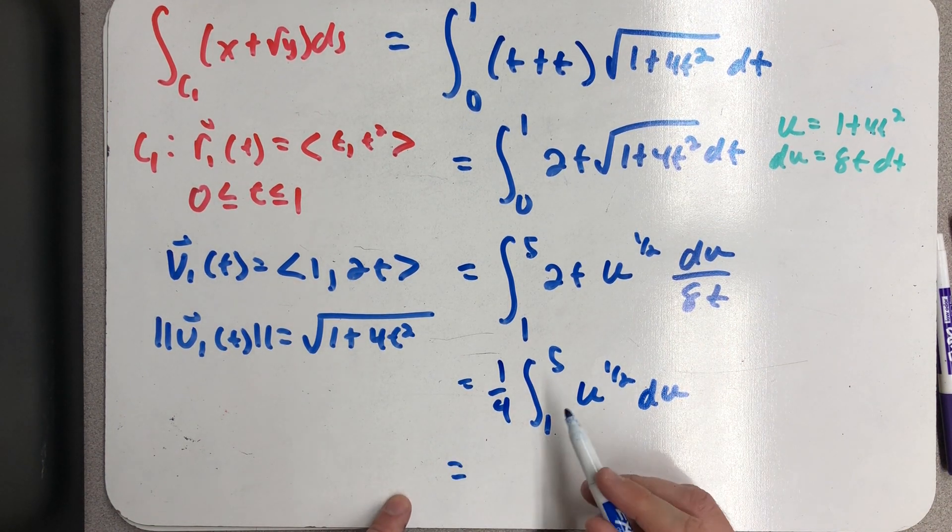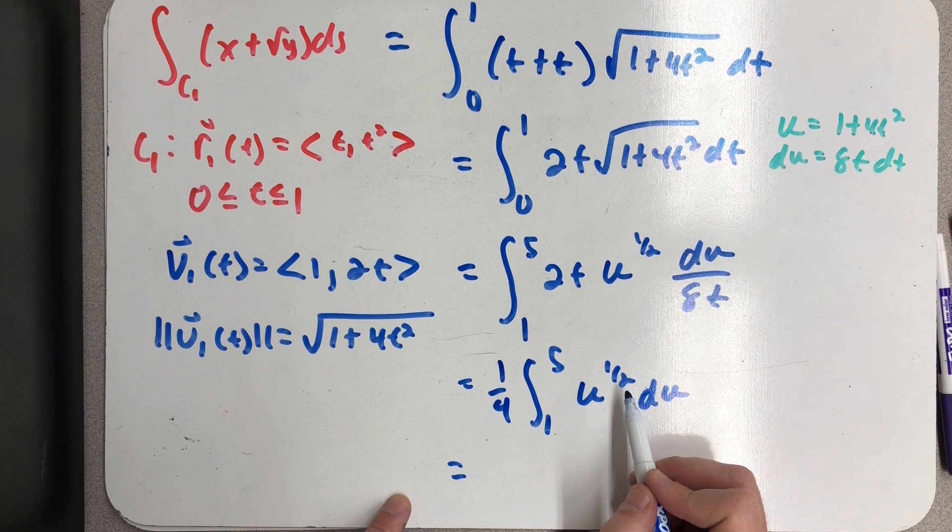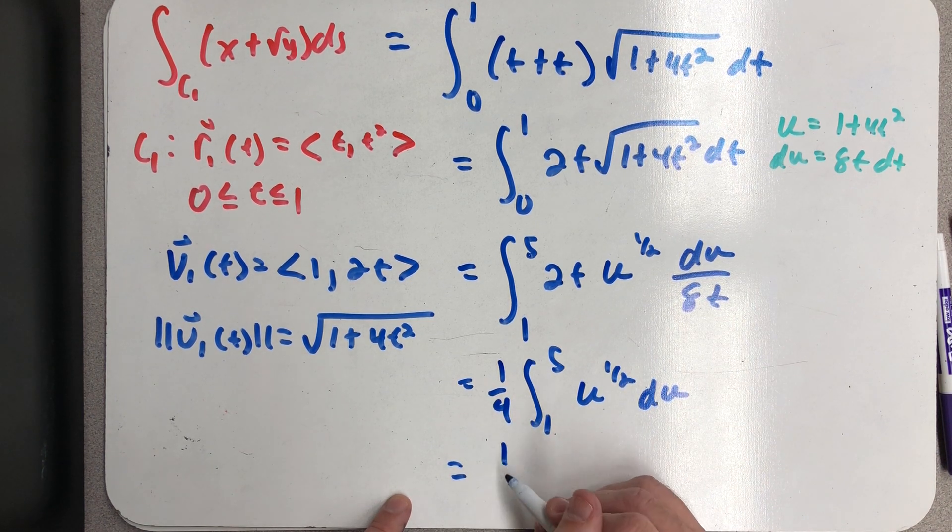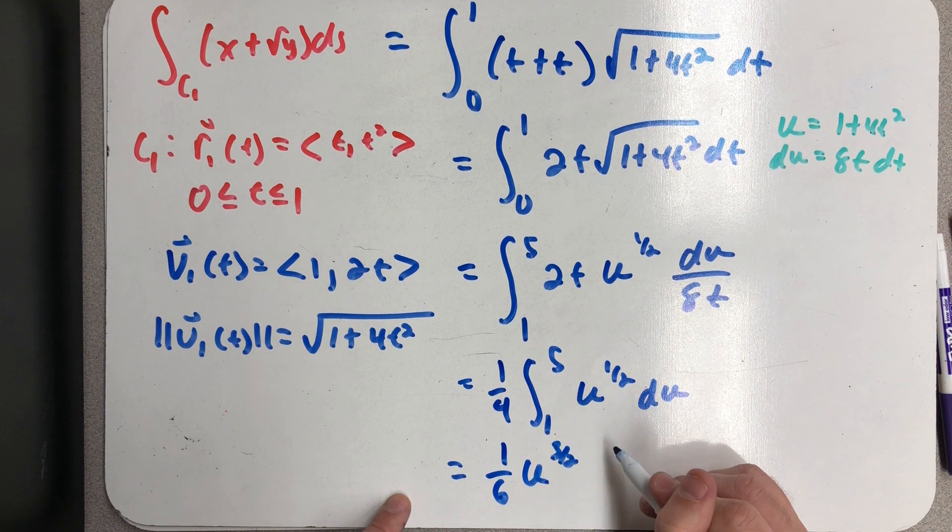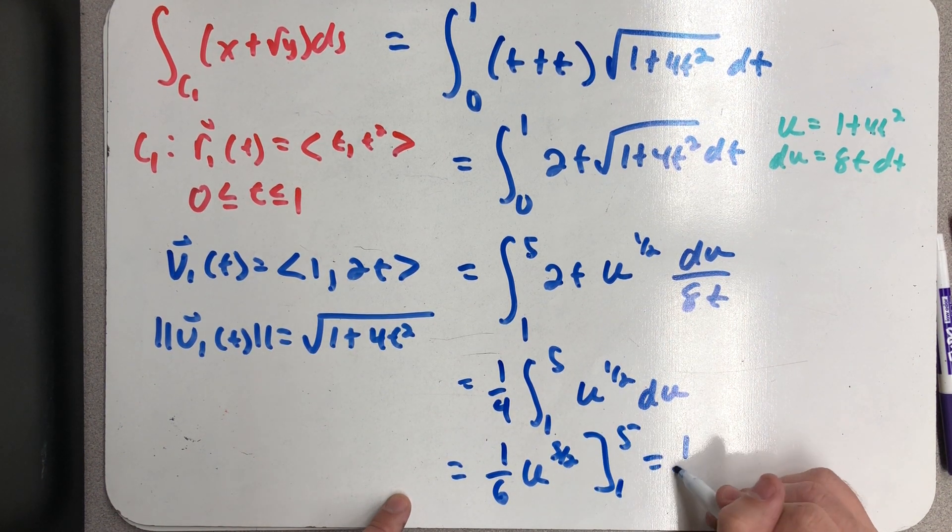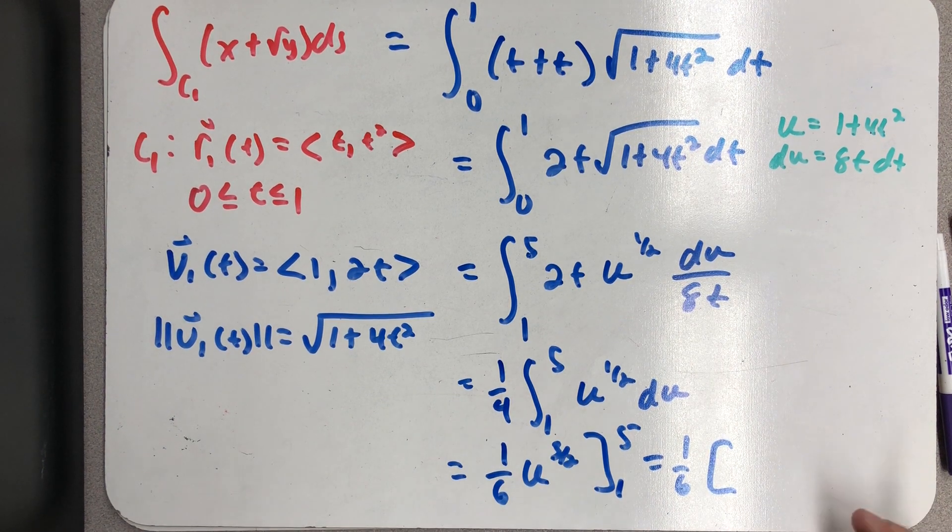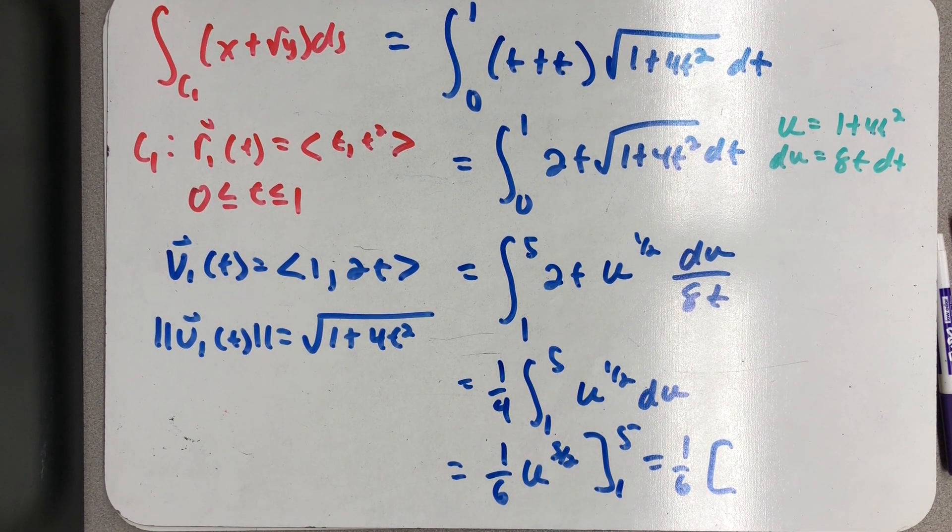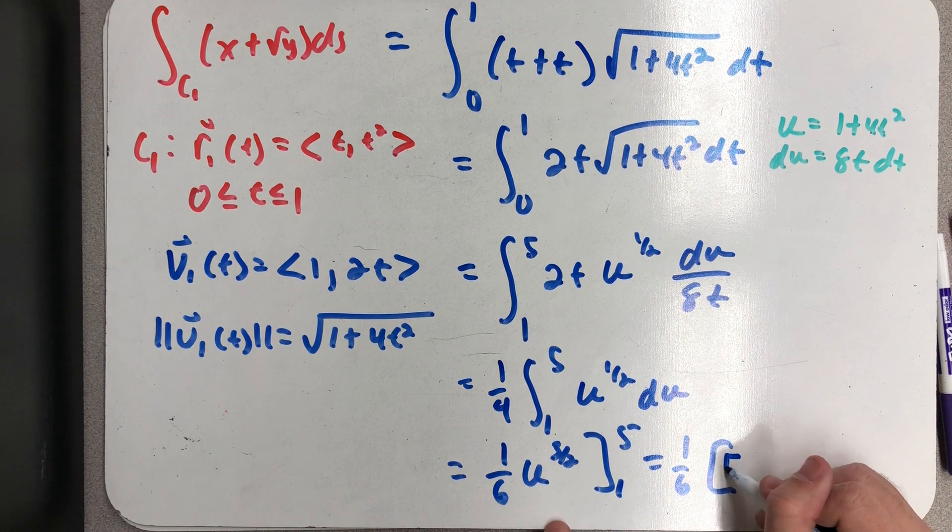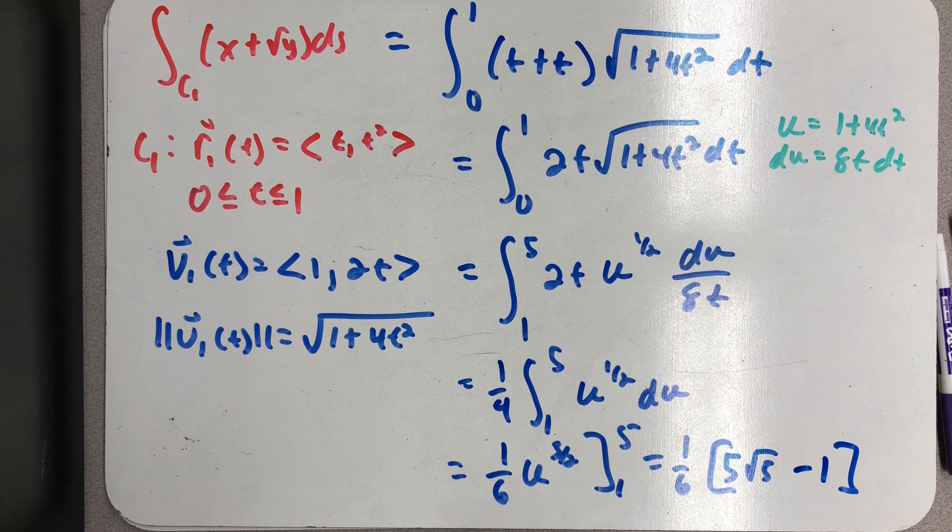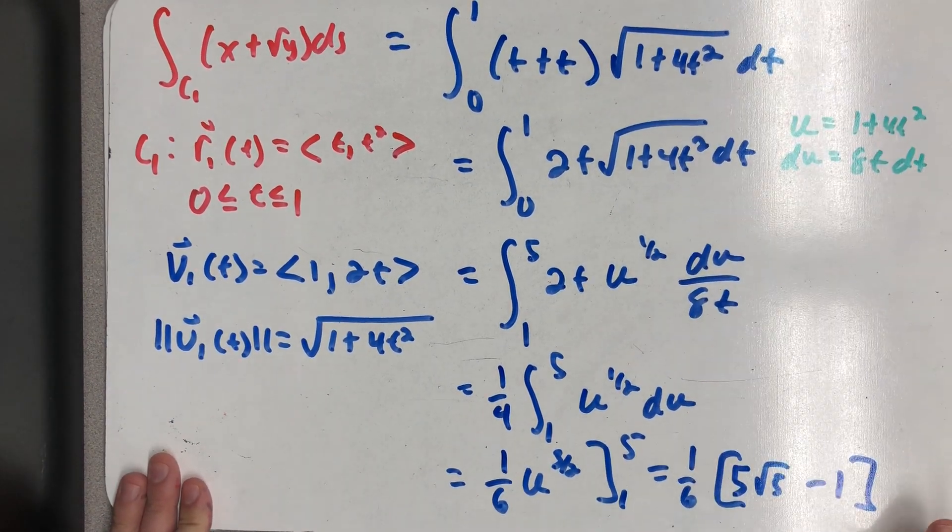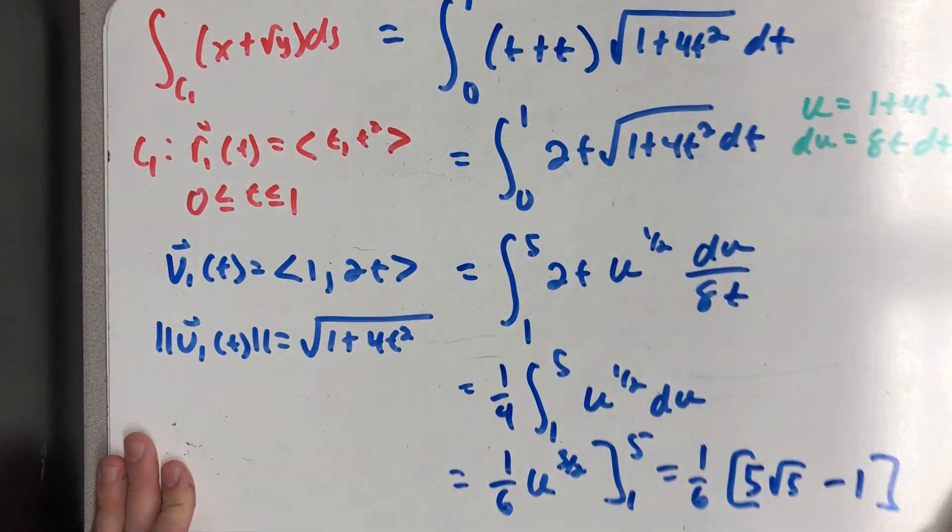A u to the one half du. So let's see, that's going to be three halves in the exponent, making that 2/3 times 1/4. I get a 1/6 u^(3/2), evaluated from one to five. Plugging in a five, I would get a square root of 125, or 5√5 minus one, all times 1/6. So I have found my line integral over the first path. So I need to hold on to that number, because in a little while I'll add something else to it.